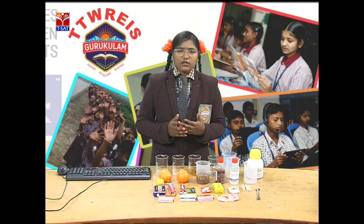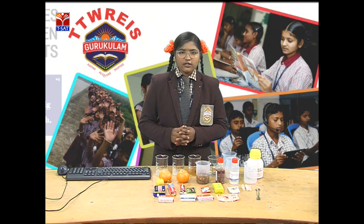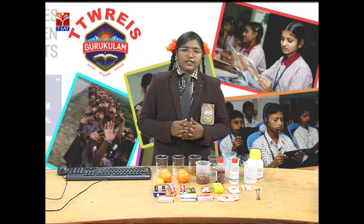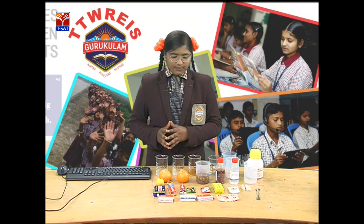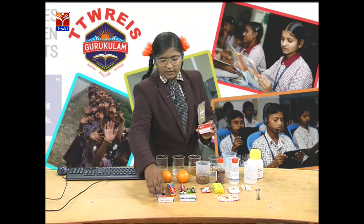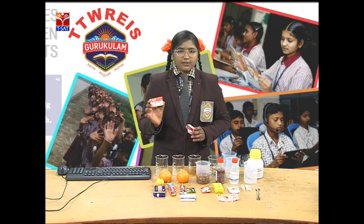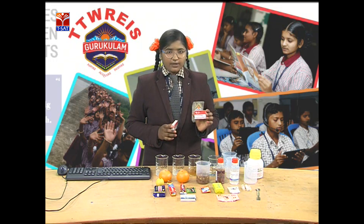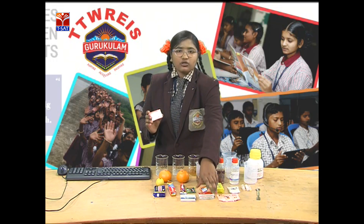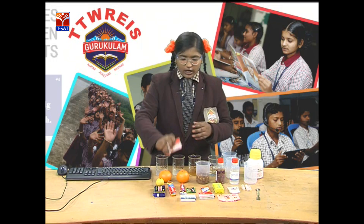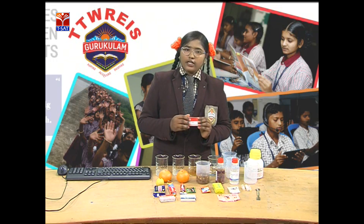What is meant by indicators and how are they helpful to find out these materials? Indicators are of two types: in the form of solutions and in the form of litmus papers. We have two types of litmus papers — red litmus paper and blue litmus paper. If red litmus paper turns blue, the substance is called a base. If blue litmus paper turns red, it is called an acid.